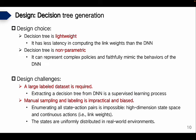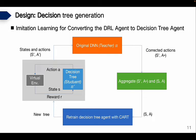We choose decision trees for online deployment for two reasons. First, a decision tree is lightweight, so it has lower latency in computing link weights than a DNN. Second, a decision tree is non-parametric, so it can represent complex policies and faithfully mimic DNN behavior. However, extracting a decision tree from a DNN is a supervised learning process requiring a large labeled dataset, and it is impractical to sample and label data manually.